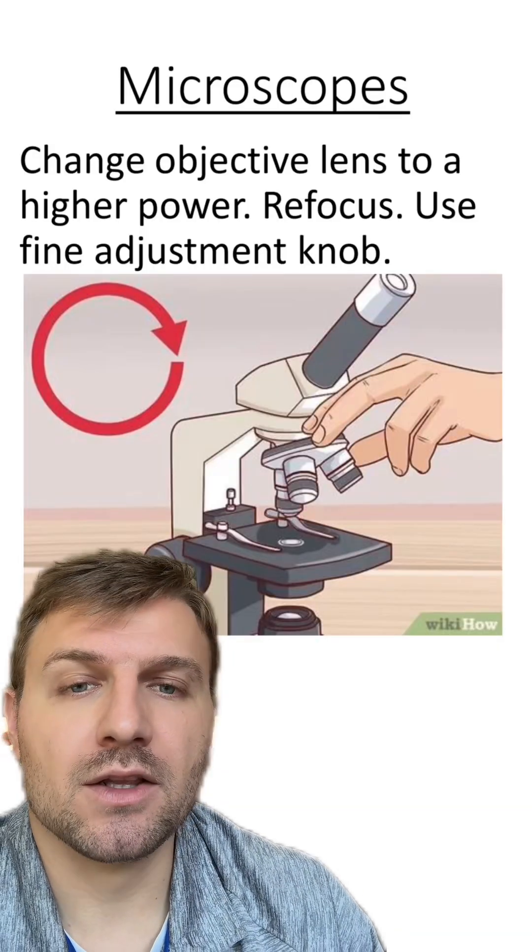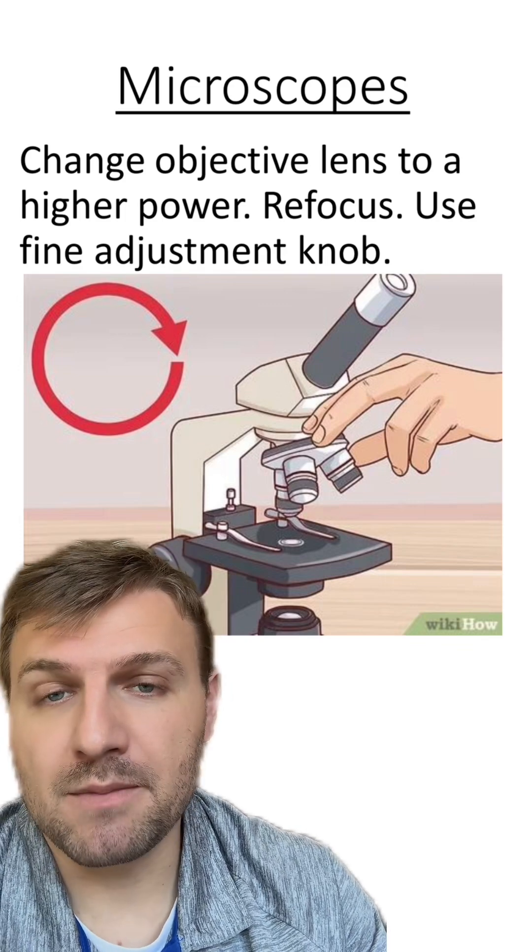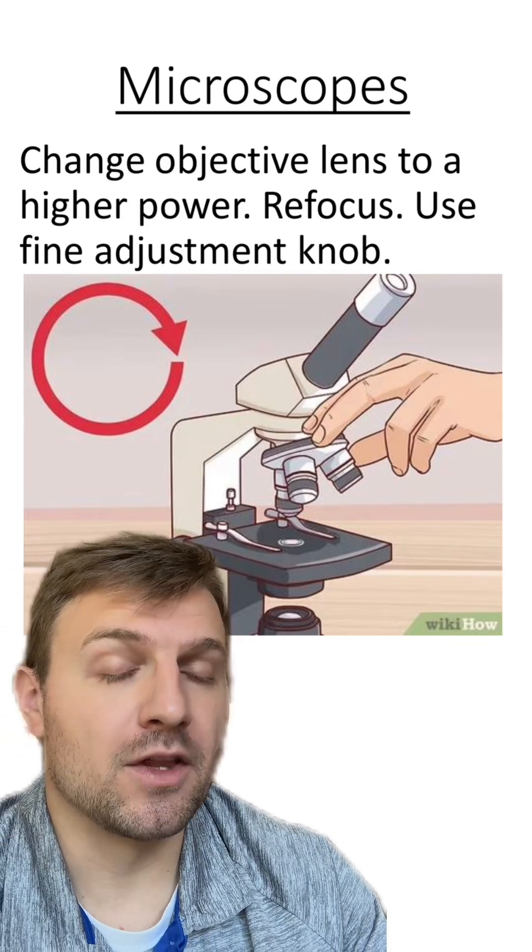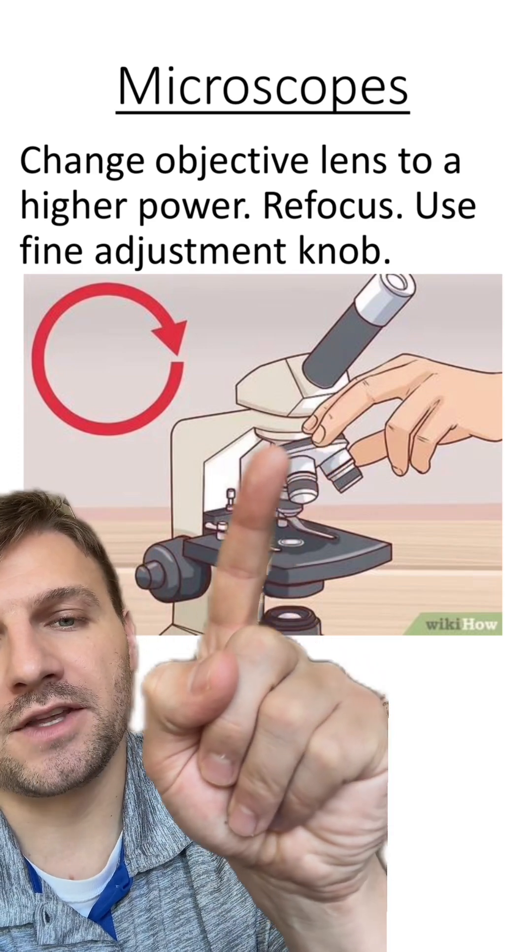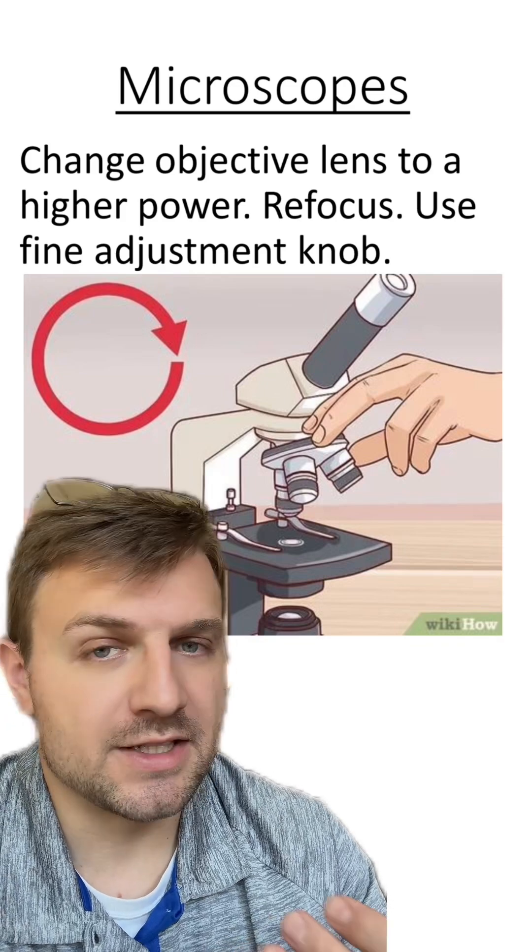After you have it focused on the lowest objective, you're going to switch to the next higher power, the medium power usually, and refocus it. It's important to remember when you're flipping to the next highest objective lens, you only use the nose piece here. It's on the top of the objective lenses. You don't actually touch the objective lenses. You don't want to damage them.